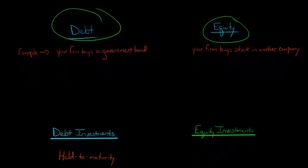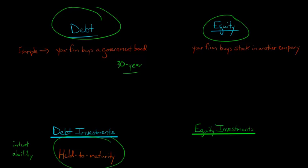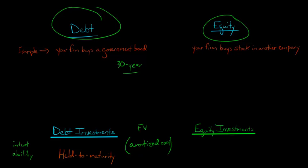One way you can classify a debt investment is as held to maturity. To classify it as held to maturity, you have to have two things: the intent and the ability to hold the debt investment to maturity. For example, if it was a 30-year government bond that you purchased, you have to show that you intend to hold this bond for the next 30 years until it matures, and that you have the ability to do so — that you're not going to go bankrupt next year. When you hold it to maturity, it goes on the balance sheet at what's called amortized cost, which is not fair value. That's the key point for held to maturity securities.